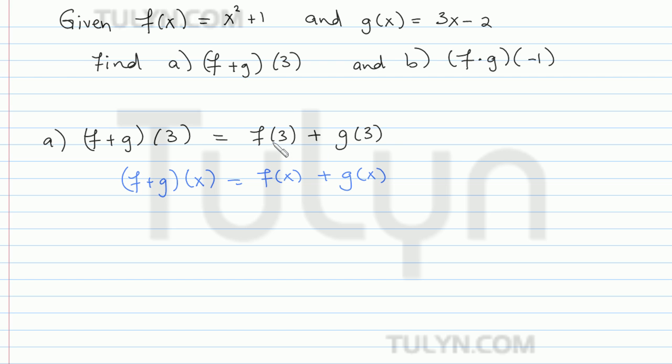So now we just have to evaluate each of the functions at 3. So f of 3 is 3 squared plus 1, since f of 3 is just f of x when x is equal to 3. So 3 squared plus 1 is 9 plus 1, which is 10.